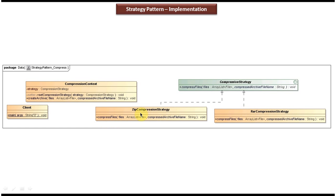Both of these concrete classes provide implementation of compress files. The compress files in the ZIP compression strategy will compress the files as a ZIP file, and compress files in RAR compression strategy will compress the file as a RAR file. On the left side you can see compression context, and it has a strategy object. The client can set what compression strategy they want to use in order to compress the files. Using the set method, the client can set the compression strategy, and the create archive method accepts a list of files and the name of the archive file.